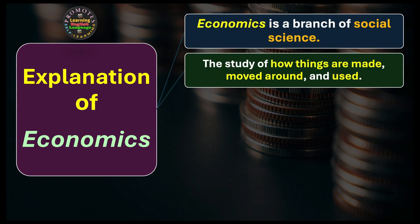Economics is in fact a branch of social science — the study of how things are made, moved around, and used. In the field of economics we study how things are manufactured, created, and brought into existence. The things we see around us have been made by different companies, or sometimes we create things by our own hands.